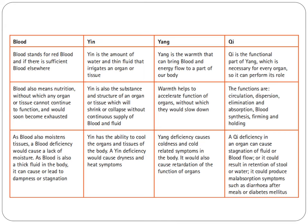Next, we have the yang, which is the warmth that can bring blood and energy flow to a part of our body. Warmth helps to accelerate the function of organs, without which they would slow down. Yang deficiency causes coldness and cold-related symptoms in the body.